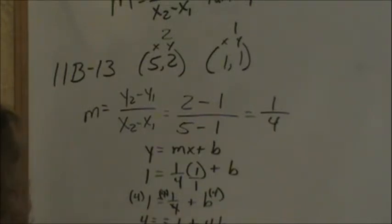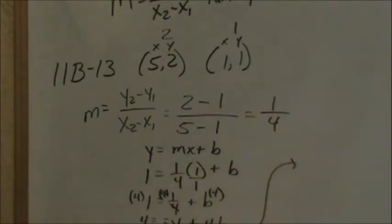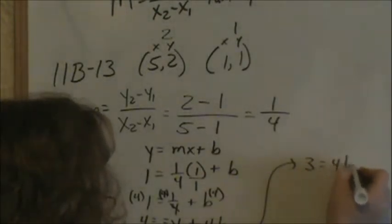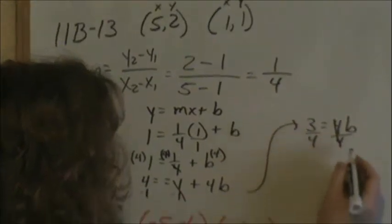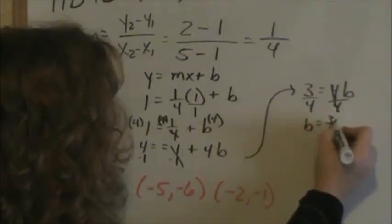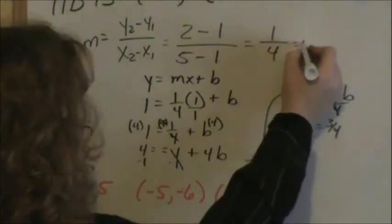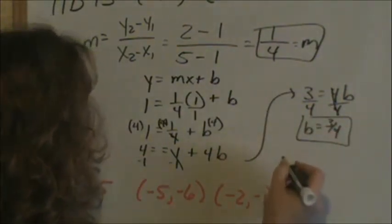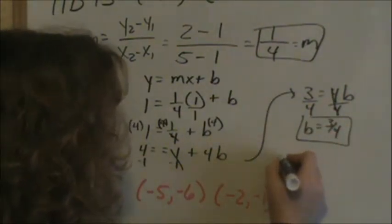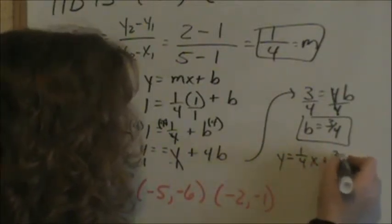Subtract 1 to both sides to get rid of that. Now it's just solving an algebra equation. So scooting up over to here, 4 minus 1 is 3, equals 4b. Now dividing both sides by 4, so that goes away. So we see that b equals 3 fourths. Now we know our slope. Our slope was 1 fourth and our y intercept is 3 fourths. We can write an equation for that line. So the equation for that line is y equals 1 fourth x plus 3 fourths.